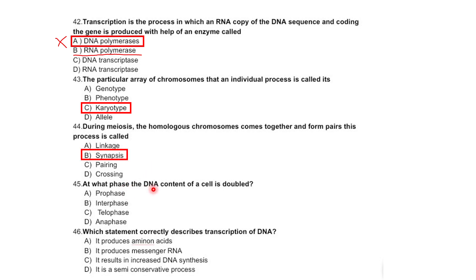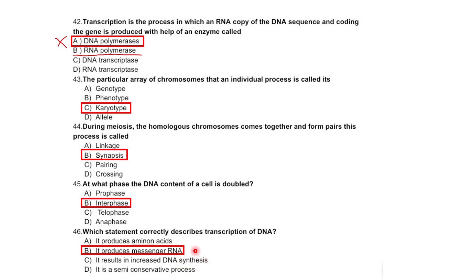At what phase is the DNA content of a cell doubled? Prophase, interphase, telophase, or anaphase — correct option is interphase. Which statement correctly describes the transcription of DNA? It produces amino acids, produces messenger RNA, results in increase in DNA synthesis, or it is a semi-conservative process — correct option is it produces messenger RNA.